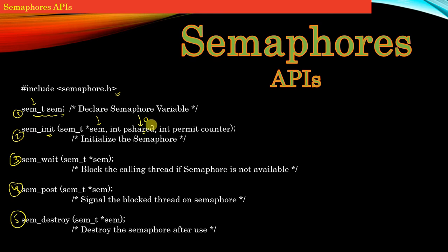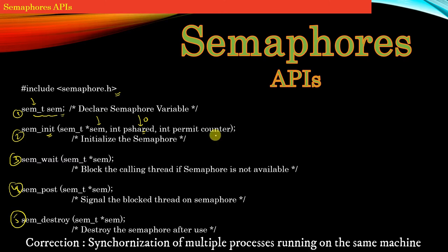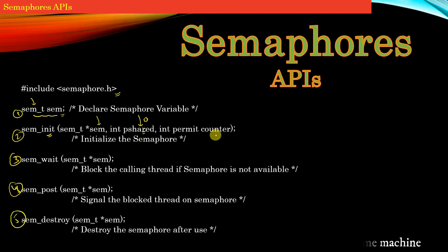We will see how to use the semaphore for synchronizing processes in the sequel part of this course. Remember, a semaphore can be used for synchronization of multiple threads running on the same machine, as well as for synchronization of multiple threads of the same process. The third argument is the initial permit counter value with which you are initializing the semaphore. This has to be a positive value.